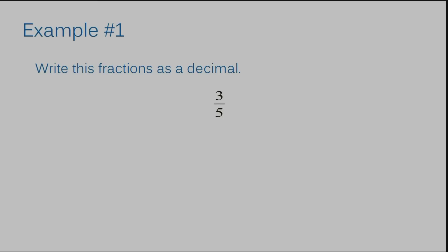Example number one: write this fraction as a decimal. When I'm given a fraction and I need to write it as a decimal, you need to remember to divide. When dividing a fraction to make it into a decimal, you always remember that the top number goes inside when you're dividing. The bottom number stays outside.